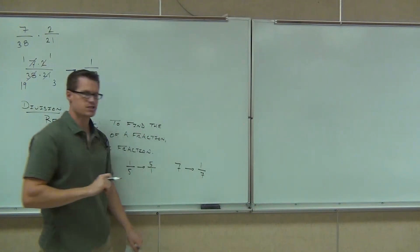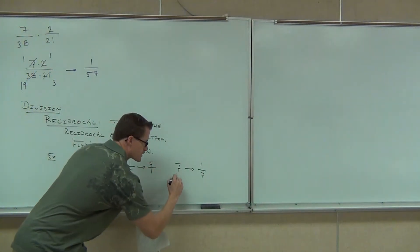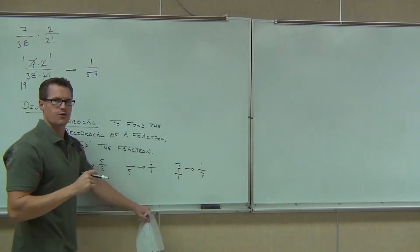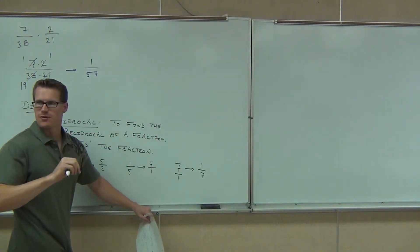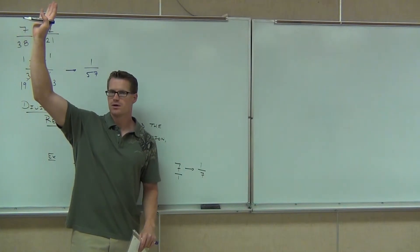So the reciprocal of 7 is 1 seventh. You can say that you've written this as 7 over 1, change it into a fraction, then you reciprocate that fraction, you get 1 over 7. You with me on this so far? Okay.